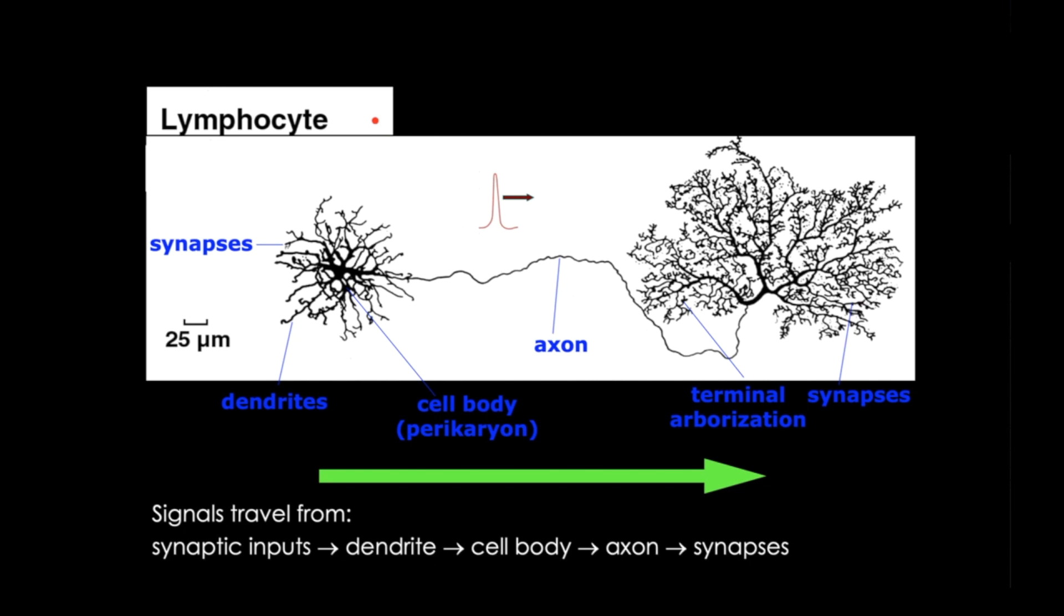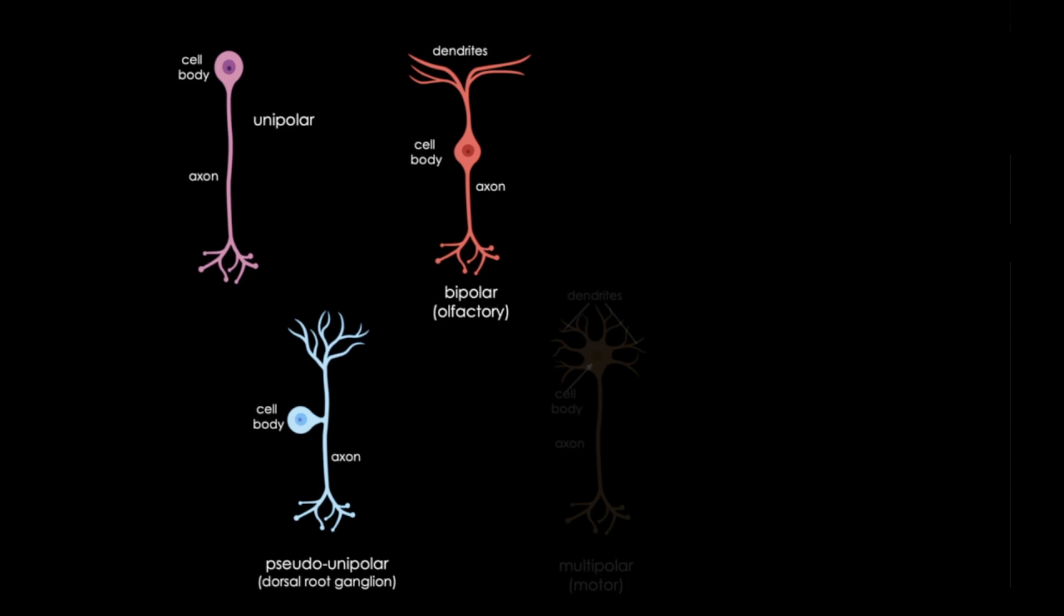Now neurons can have different forms, and these differences reflect different functions. Neurons can be classified based on the overall shape of the cell body, with the most common being the granular versus the pyramidal shape.